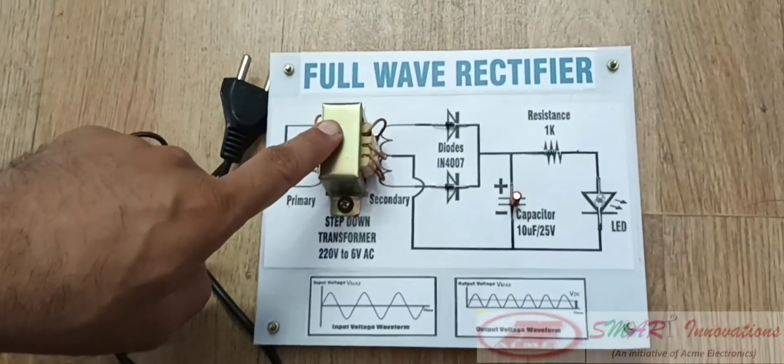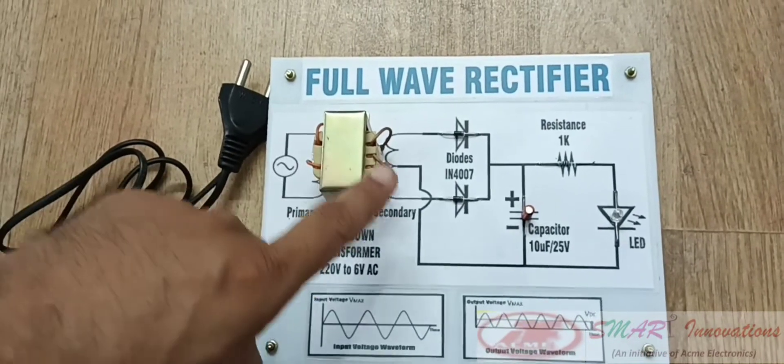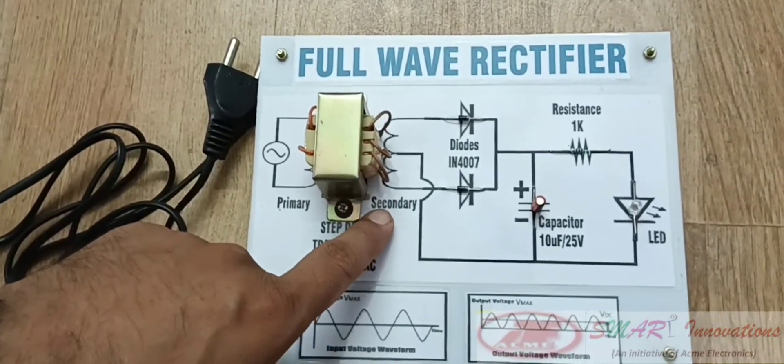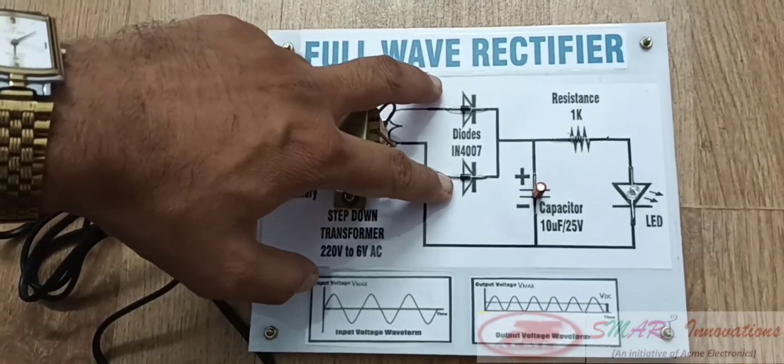The step-down transformer steps the main line voltage 220V to 6V AC, which is then rectified by the diodes.